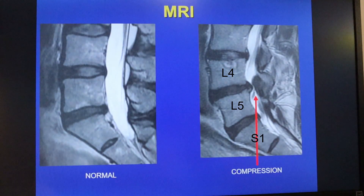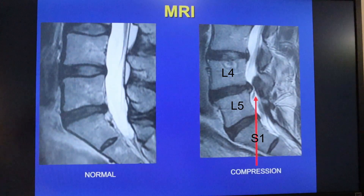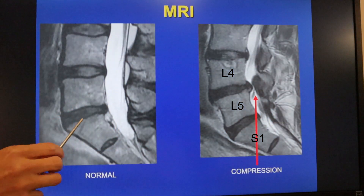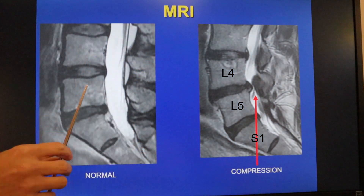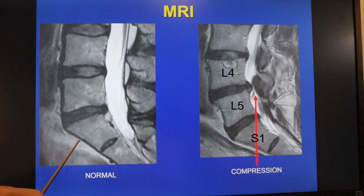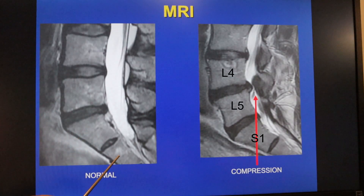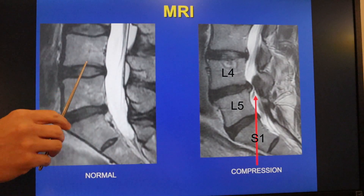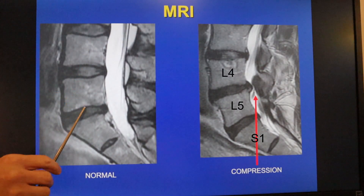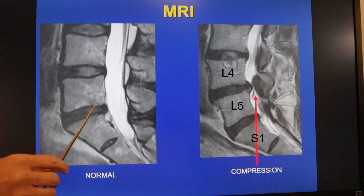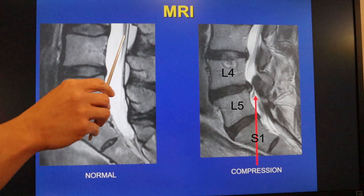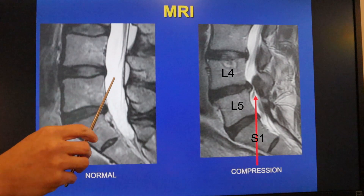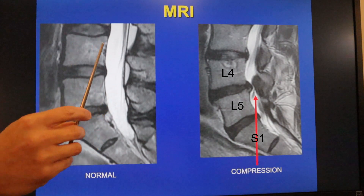Let's look at some basic imaging on an MRI to see what lumbar spinal stenosis looks like. Here on the left-hand side is a normal MRI. There's the back, there's the buttock, and there's the belly. This bone is called the sacrum. That's S1, L5, L4. These are the discs, which are the soft cushion between the bones. These are the nerves coming down — strands of gray swimming in this white stuff, which is spinal fluid.